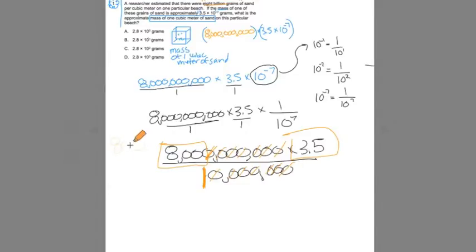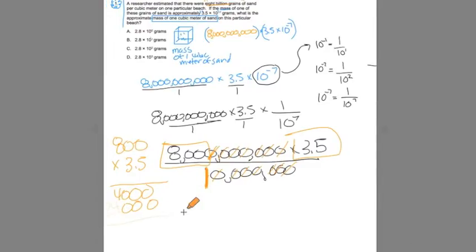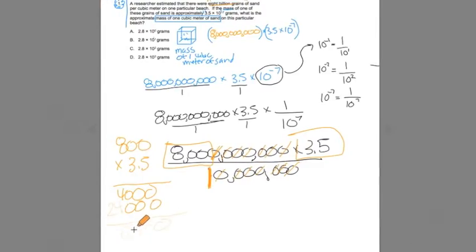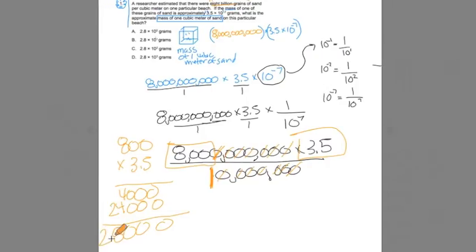5 times 0 is 0. 5 times 0 is 0. 5 times 8 is 40. Carry the 0. 3 times 0 is 0. 3 times 0 is 0. 3 times 8 is 24. Add these values up. 0, 0, 0, 8, 2. Now I have a decimal here. And I've got to move the decimal back over here. And this boils down to 2,800.